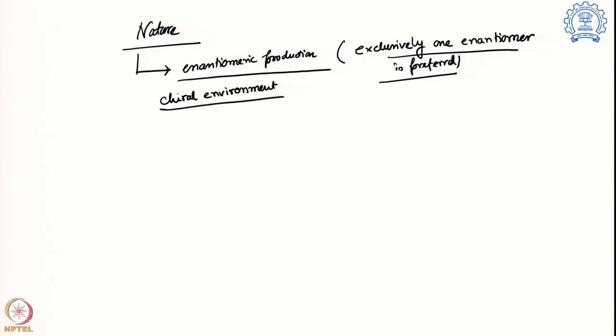The question is: when you talk about a chiral environment in nature, where did it all begin? Right now it is happening in metalloenzymes which are chiral because they are made of amino acids, carbohydrates, or nucleic acids — they create a chiral environment and we get exclusively or preferably one enantiomer. But the question remains: where did it all begin?